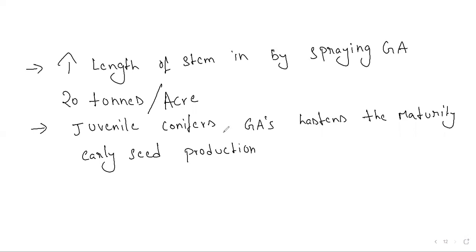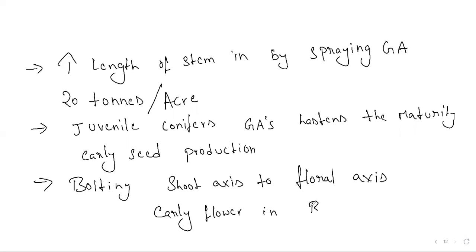Mainly used for bolting and flowering. It stimulates the rapid stem elongation into bolt-like structure, called bolting, and transformation of shoot axis into floral axis. Gibberellins thus induce early flowering in beet, cabbage, and many plants with rosette habit.